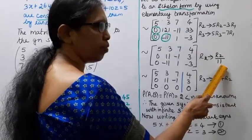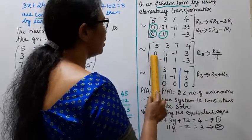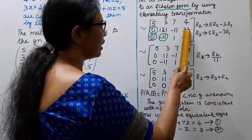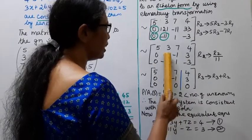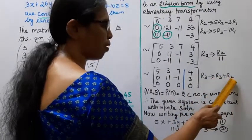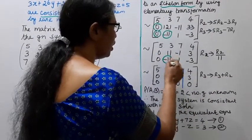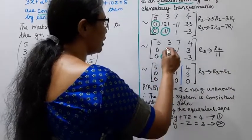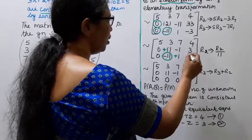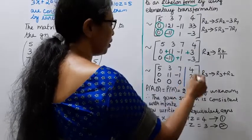Dividing row 2 by 11: 121 ÷ 11 = 11, −11 ÷ 11 = −1, 33 ÷ 11 = 3. Then applying further elimination: −11 + 11 = 0, 1 − 1 = 0, −3 + 3 = 0. The third row becomes all zeros.